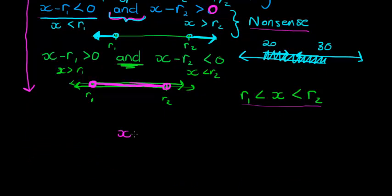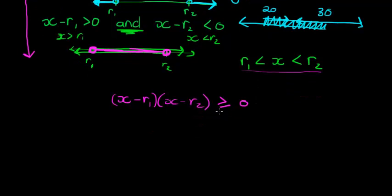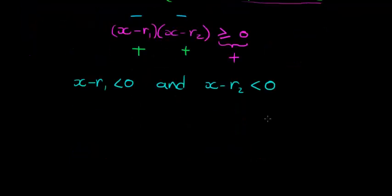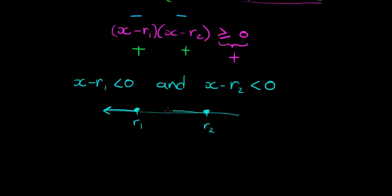For (x − r1)(x − r2) ≥ 0, the product is positive or zero. I can get a positive product with negative × negative or positive × positive. For the negative and negative case: (x − r1) < 0 AND (x − r2) < 0, which means x < r1 and x < r2. Drawing this, I'm smaller than r1 and smaller than r2.